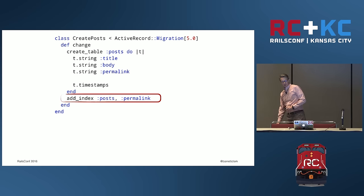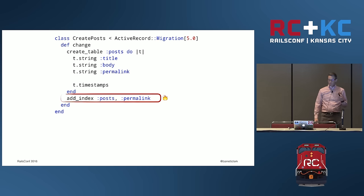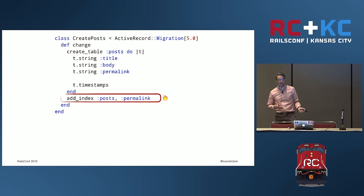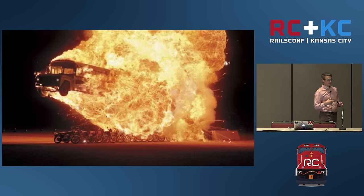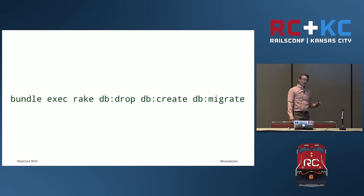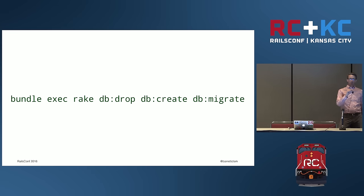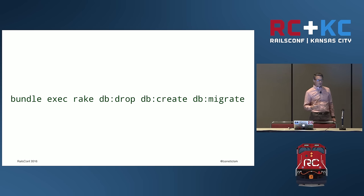We're going to add an index to the posts table on the permalink so we don't table-scan every time we look up that field, because table scanning is bad. But we've introduced a new database object, so when we try to roll it back, ActiveRecord is going to explicitly drop the index and then drop the table. So we need a different strategy: we're going to drop the database and recreate it, then re-migrate — `bundle exec rake db:drop db:create db:migrate`. You can see we can run multiple tasks serially. Yes, this is heavy-handed — totally scorched earth — but we're in early development, so it's okay.